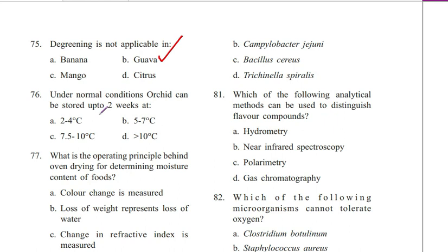Question 76. Under normal conditions, orchid can be stored up to 2 weeks at: 2 to 4°C, 5 to 7°C, 7.5 to 10°C, or greater than 10°C. Answer is B. 5 to 7 degrees Celsius.